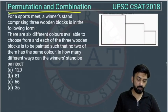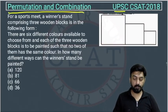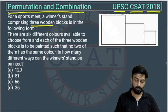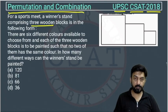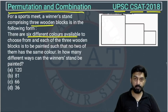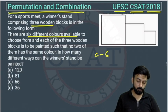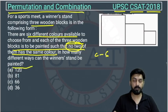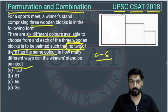This is a permutation and combination question asked by UPSC in their CSET paper of 2018. For a sport meet, a winner's stand comprising three wooden blocks is given. There are six different colors available to choose from, and each of the three wooden blocks is to be painted such that no two of them have the same color. In how many different ways can the winner's stand be painted?